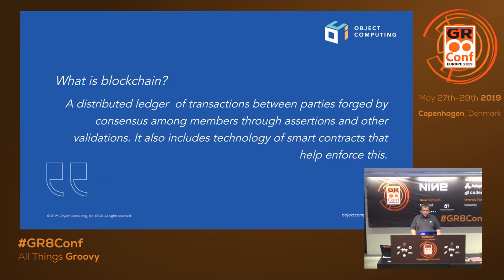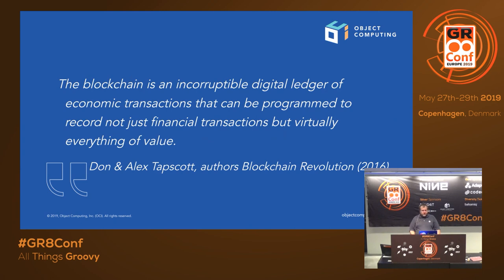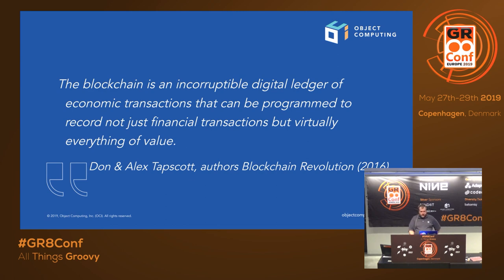Blockchain includes technology like smart contracts — you're not only doing a transaction, but you could have a contract that runs some bit of code and does something. Blockchain is really this sort of incorruptible digital ledger. Everything's encrypted, it's all distributed, and it handles economic transactions. But it can be more than just financial transactions — really it's for tracking anything of value.